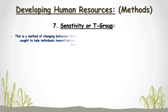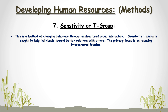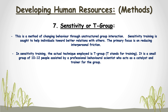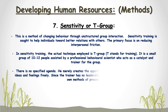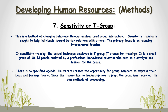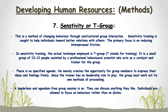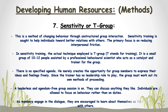Sensitivity or T-group Training. This is a method of changing behavior through unstructured group interaction. Sensitivity training is sought to help individuals toward better relations with others, with the primary focus on reducing interpersonal friction. The actual technique employed is the T-group — T stands for training. It is a small group of 10 to 12 people assisted by a professional behavioral scientist who acts as a catalyst and trainer. There is no specified agenda; the facilitator merely creates the opportunity for group members to express their ideas and feelings freely. Since the trainer has no leadership role, the group must work out its own methods of proceeding. Individuals are allowed to focus on behavior rather than on duties, and members are encouraged to learn about themselves as they interact with others.